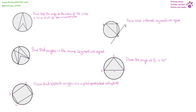In this video, I'm going to show you proof of five parts of circle theorem. We are going to prove that the angle at the center of the circle is twice that at the circumference, the angles in alternate segments are equal, the angles in the same segments are equal, the angle at the circumference is 90 degrees, and the opposite angles in a cyclic quadrilateral add up to 180 degrees.